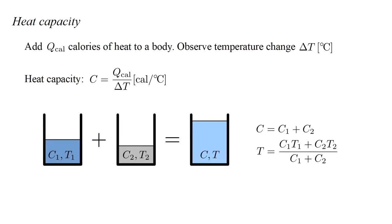When two bodies are combined and reach thermal equilibrium, the resulting heat capacity is the sum of the individual heat capacities, and the equilibrium temperature is the weighted sum of the individual temperatures, with the heat capacities as weighting factors. If we know one of the heat capacities, and we measure the three temperatures, then we can use this equation to solve for the unknown heat capacity.